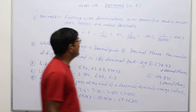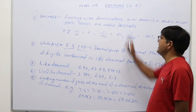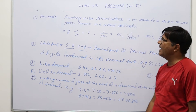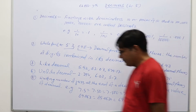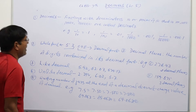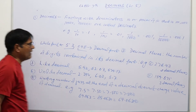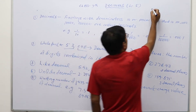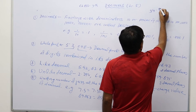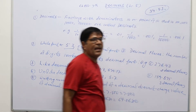Good morning students, class 7th. Next topic is decimals. So first of all we will discuss what decimals are. Decimals means, let us suppose if any number is written as 34.52, then this is a decimal number.